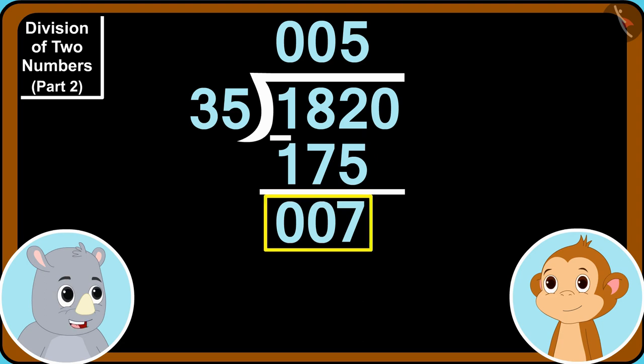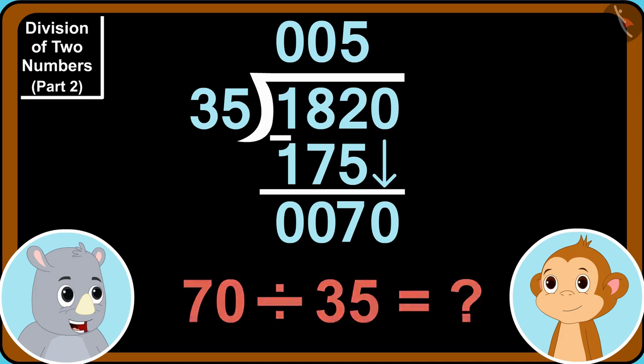Now, we will bring down zero and write it next to the 7 at the bottom in this way. Now, at the end, tell me Babban. Can we divide 70 by 35?